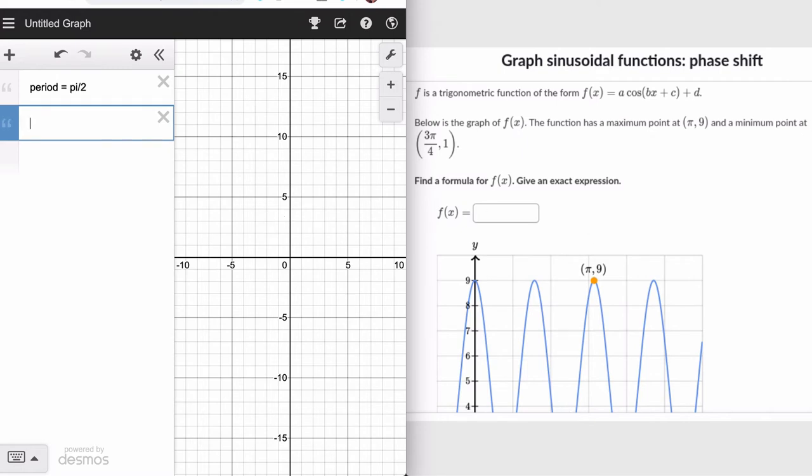Alright, that's our period from one peak to the other. Now I'm thinking about my midline. My midline is the center of this function, and it's the center of the heights of 9 and 1. So I'm going to do 9 plus 1 and then divide that by 2, and that's 5. The amplitude is going to be the distance from a peak, 9, to the midline, 5. So 9 minus 5 is 4.